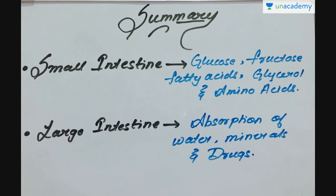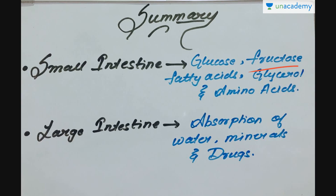The small intestine is the principal organ for absorption of nutrients. Digestion is completed here, and the final products of digestion — such as glucose, fructose, fatty acids, glycerol, and amino acids — are absorbed through the mucosa into the bloodstream and lymph.